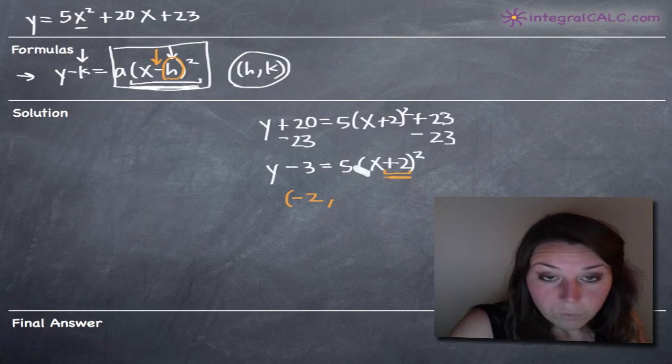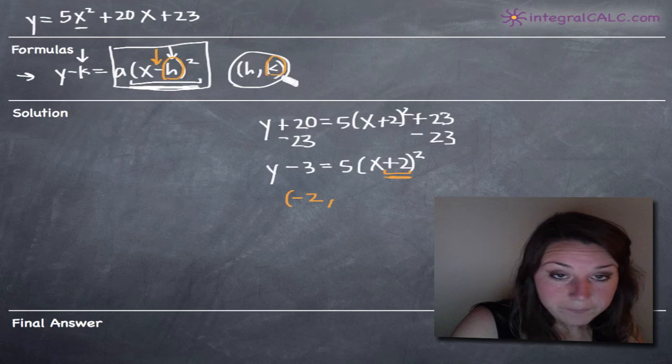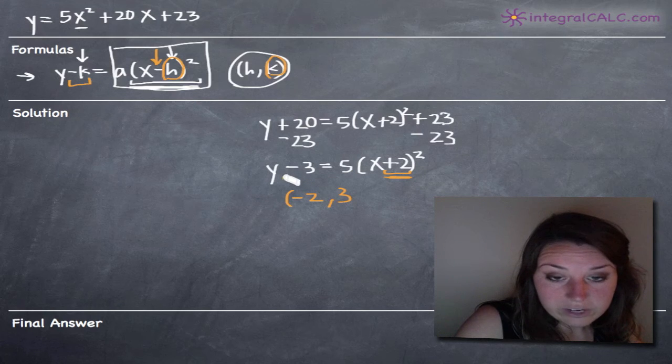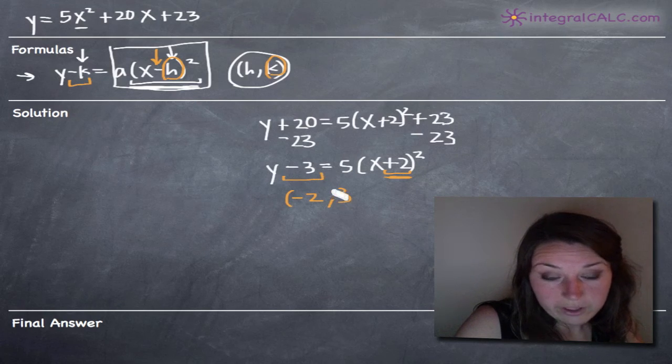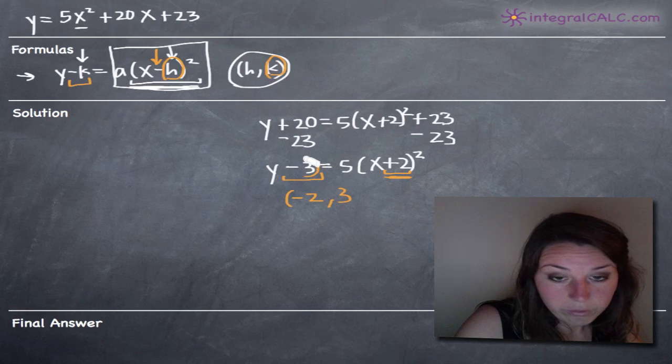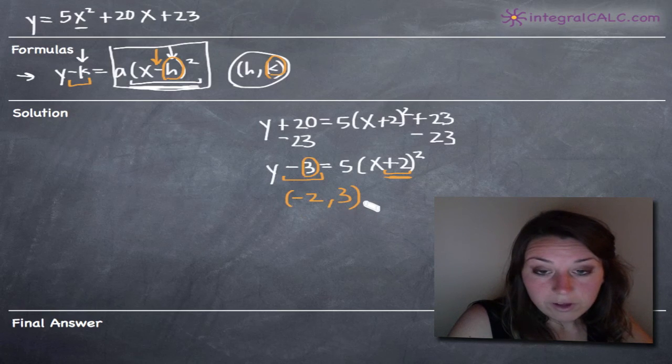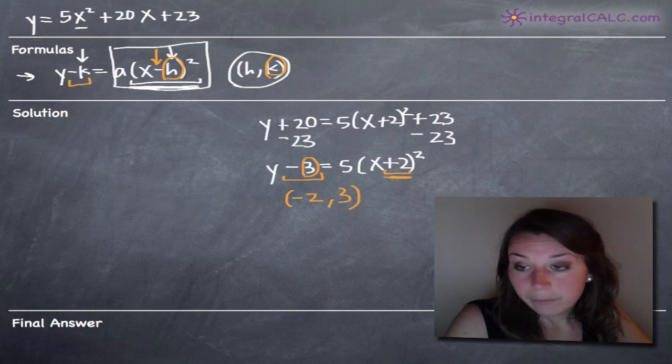For our y-coordinate here, k will pull out just 3 because notice in our formula, we have minus k and in our equation down here, we've got minus 3. So we can just pull out the 3 by itself. So negative 2, 3 is therefore the vertex of our parabola.